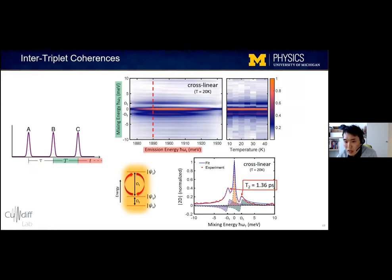And we can, of course, fit these slices, for example, at 20 Kelvin, to extract an inter-triplet coherence time of 1.36 picoseconds.